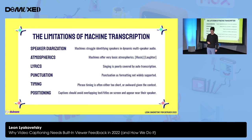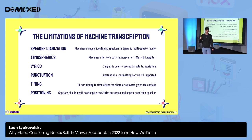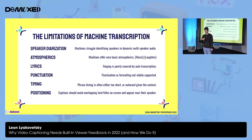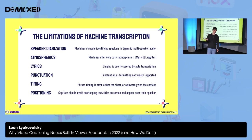There are things that machines just cannot do yet. They struggle identifying speakers in dynamic situations. They struggle with atmospherics — only doing very basic ones like music and laughter, which is very unhelpful. They can't do singing and music videos. They struggle with punctuation as formatting, like when quoting someone. Timings get off, often by a word or two, or the caption is too short or too long. And finally, positioning is only done by humans right now, and very poorly by AI, if at all.